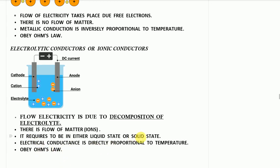The electrolyte requires to be in either a liquid or gaseous state — not solid. This is because the dissociated ions need to move freely toward the cathode and anode respectively. In a solid state they cannot move because all atoms are closely packed together.